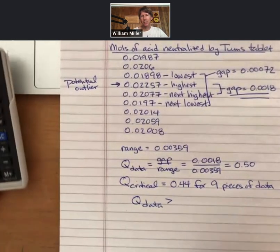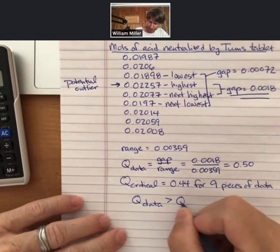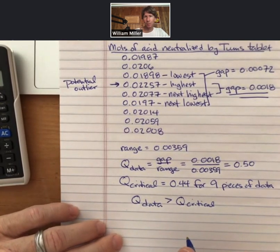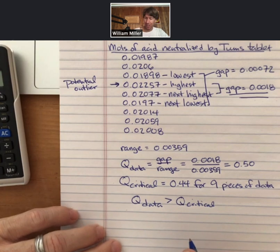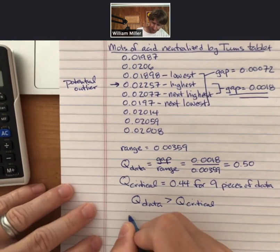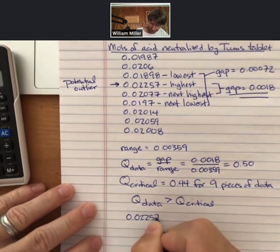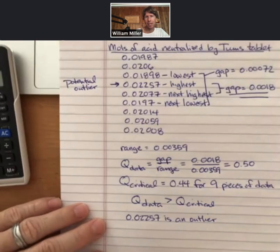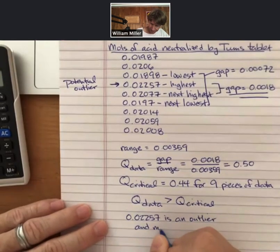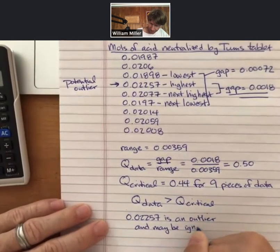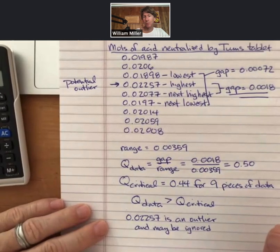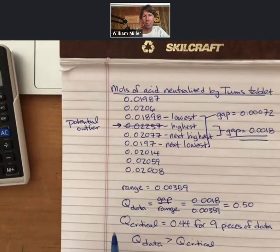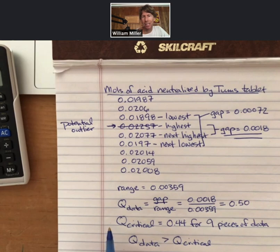In this case, Q data is greater than Q critical, which is the condition to delete or ignore the outlier. It is an outlier. So 0.02257 is an outlier and may be ignored or neglected. You'll always do a Q test before you do your average and standard deviation, because this means that we only have eight data points left, eight points from which to average and take a standard deviation.